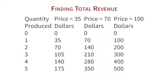The amount of revenue depends on the price. If the price is $35, the revenue from selling one crate is $35, and from two crates is $70. If the price is $70 a crate, then one crate gives $70 and two crates gives $140. If the price is $100, then two crates is $200 and five crates is $500. That's revenue.